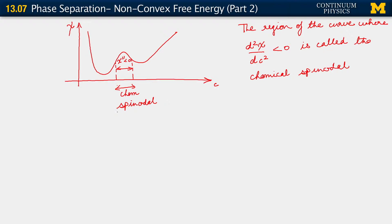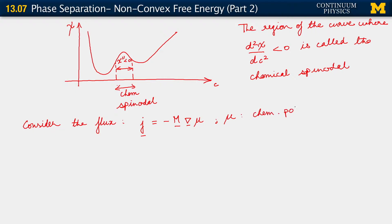Now, what happens here is the following. Over this chemical spinodal, consider our formula for the flux — something we wrote out last time using non-equilibrium thermodynamics. The mass flux J is equal to minus a positive semi-definite mobility tensor times grad mu, where mu is the chemical potential.